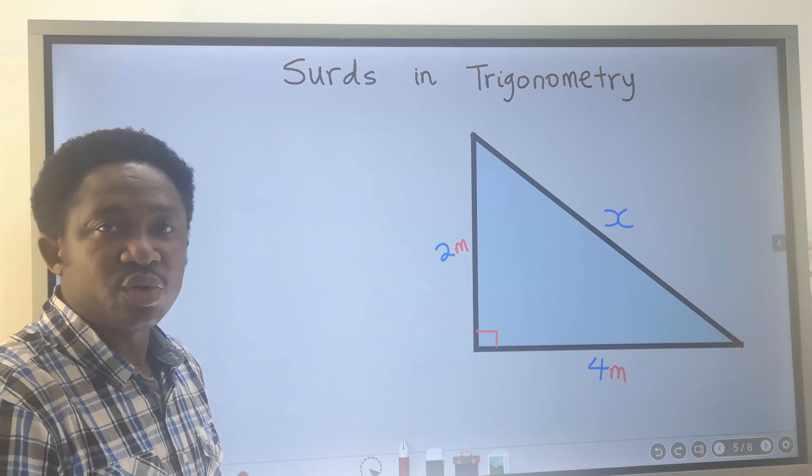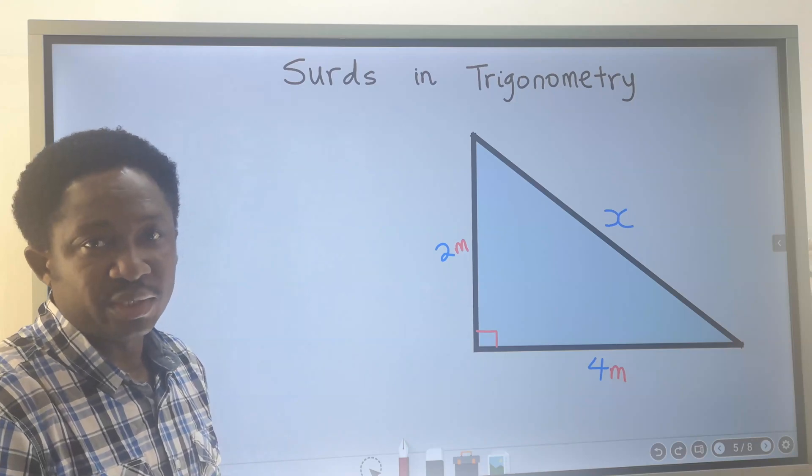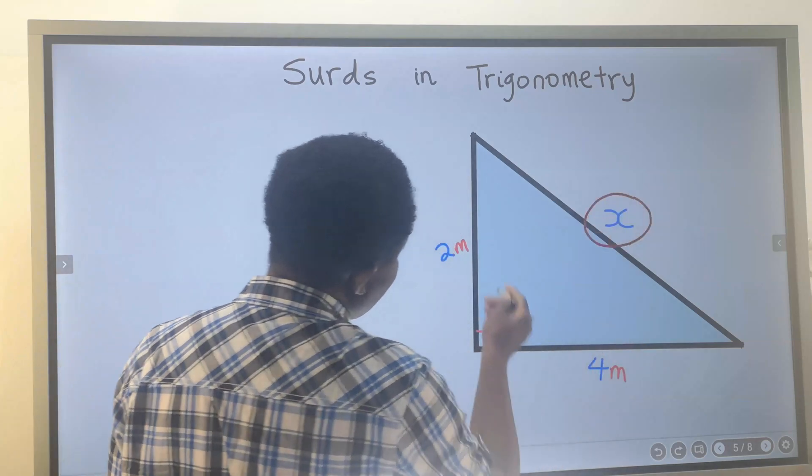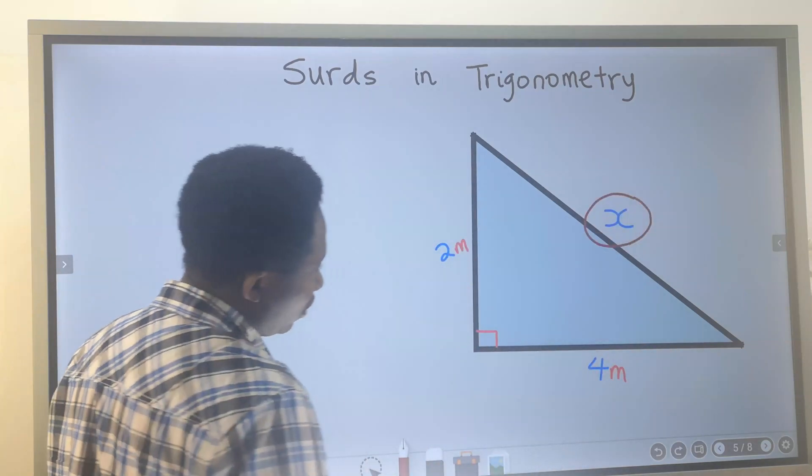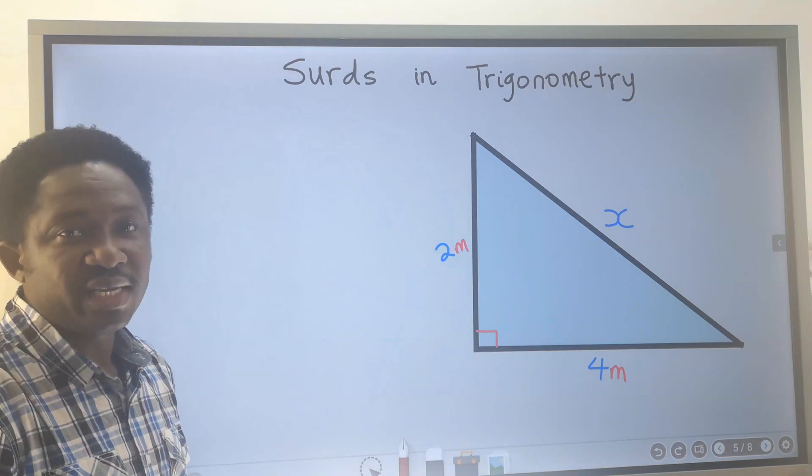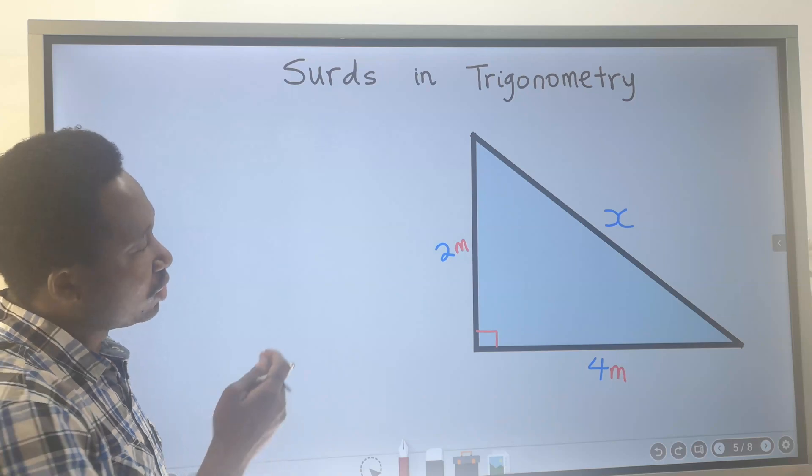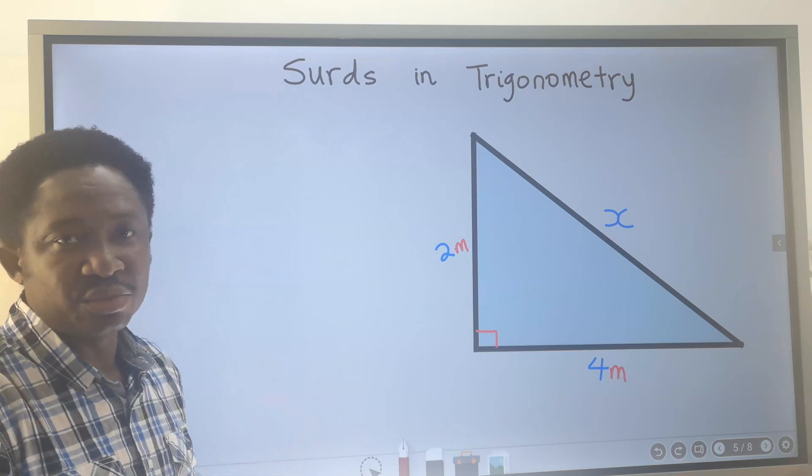Let's consider surds in trigonometry. Let's find x in this right angle triangle. To find any side on a right angle triangle without considering the internal angles,